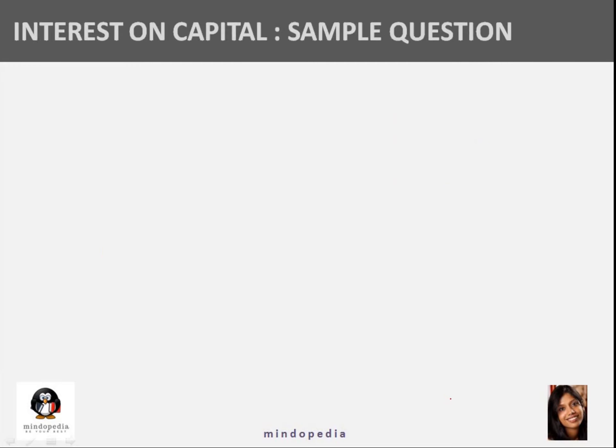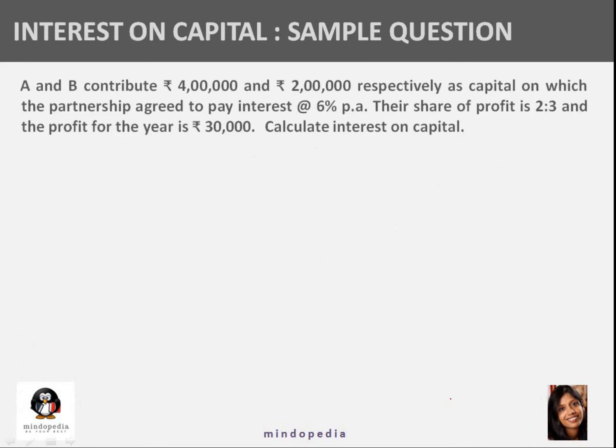Let us go ahead and read the sample question. A and B contribute 4 lakh and 2 lakh respectively as capital, on which the partnership agreed to pay a rate of interest of 6% per annum. Their share of profit is 2:3. Profit for the year is 30,000. Calculate interest on capital.